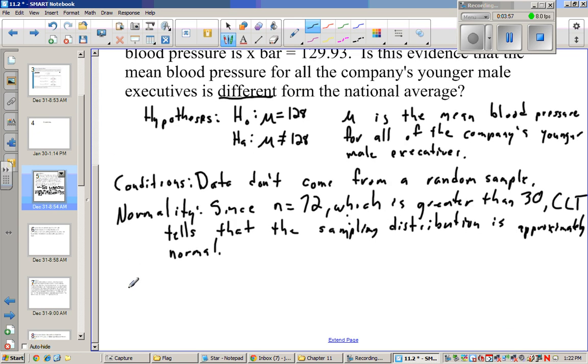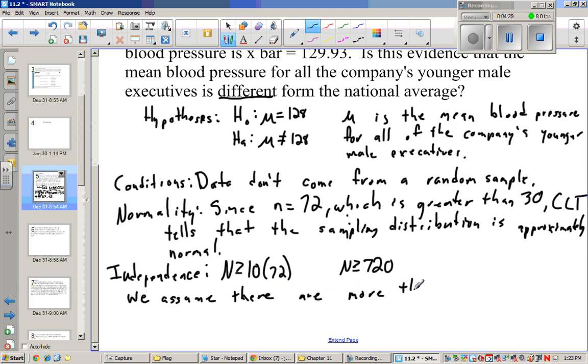Alright, and then our last one, independence. Now, I don't know the number of executives on hand, but it passes if there's more than 720 executives. So we can just say, that seems like a lot, but we can just write, we assume there are more than 720 executives in this company.